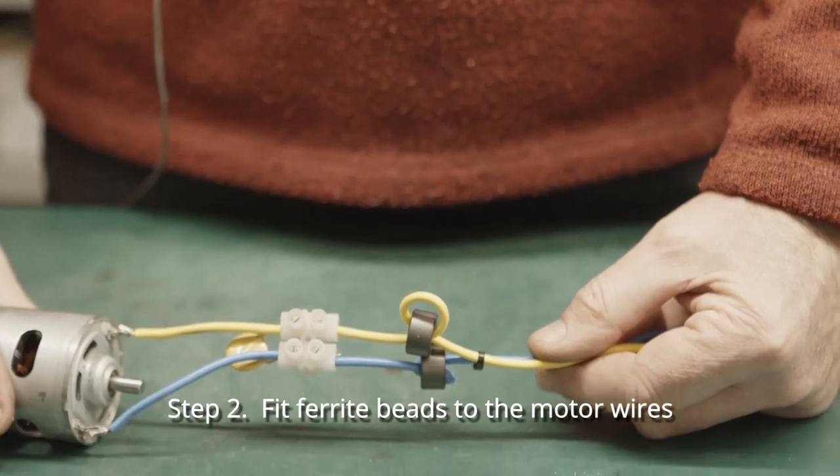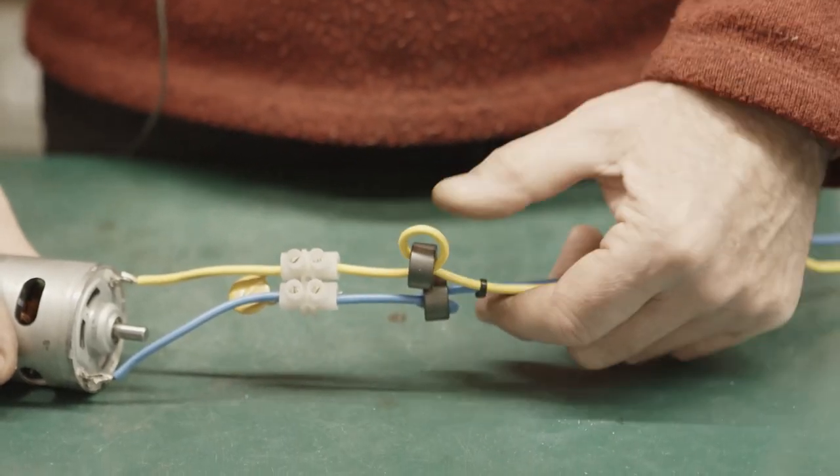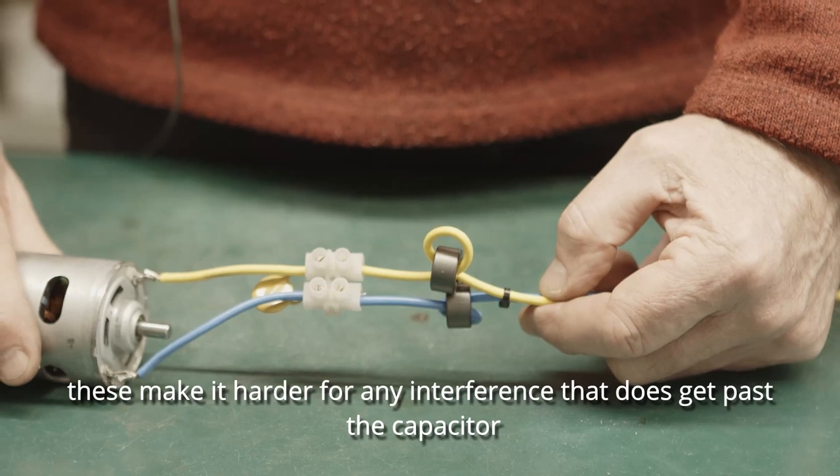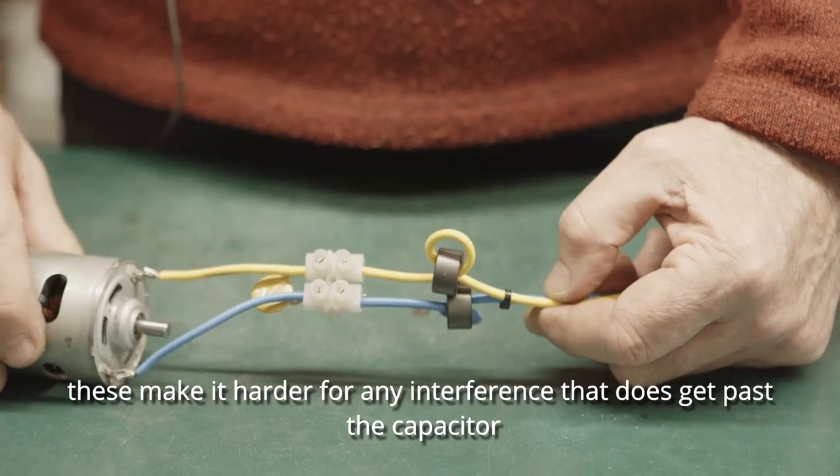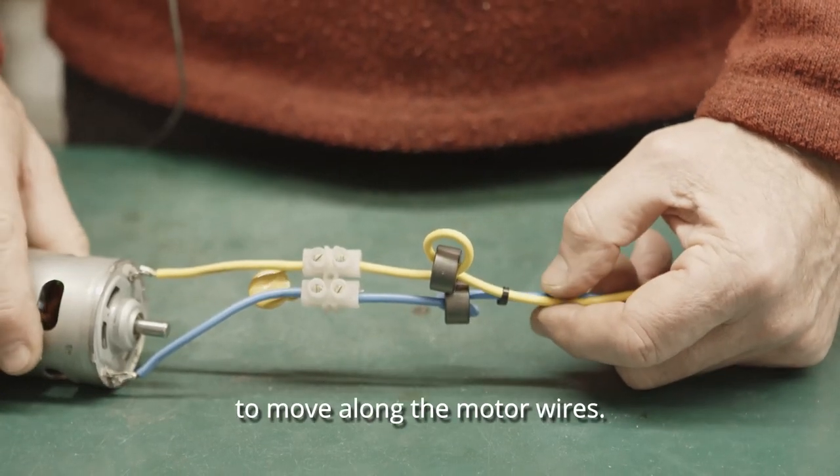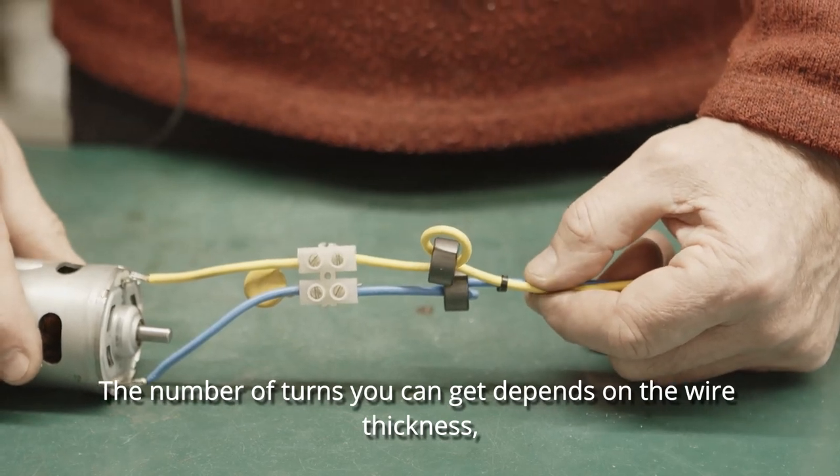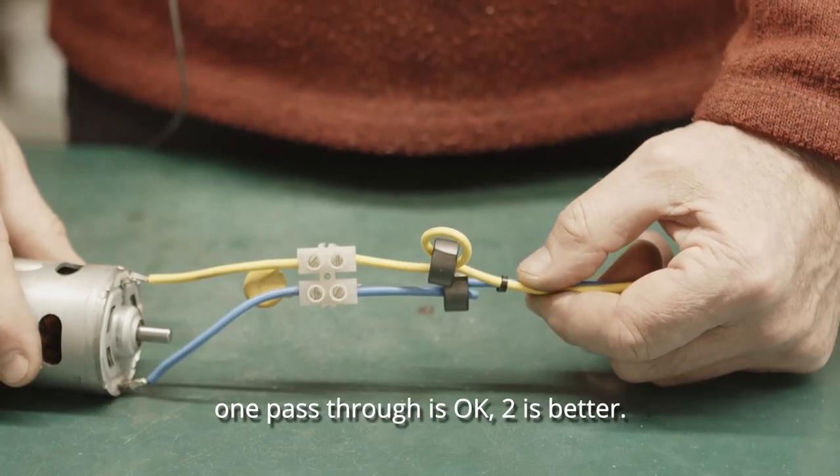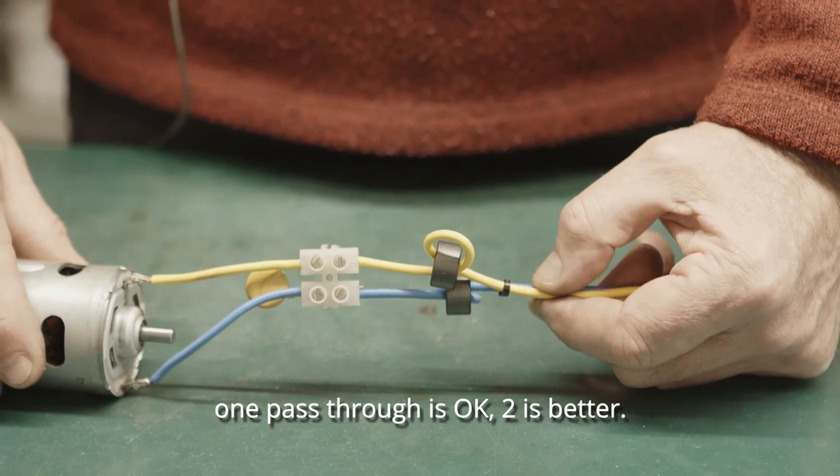Step two, fit ferrite beads to the motor wires. These make it harder for any interference that does get past the capacitor to move along the motor wires. The number of turns you can get depends on the wire thickness. One pass through is okay, two is better.